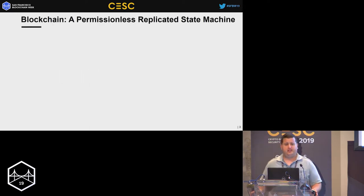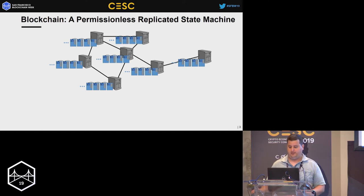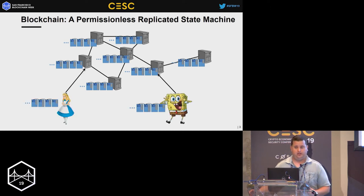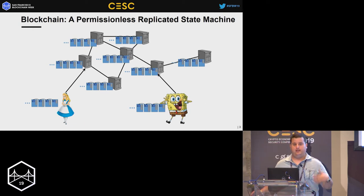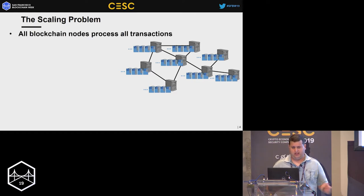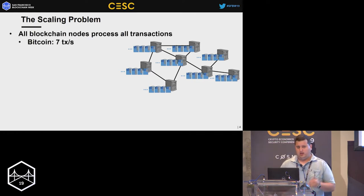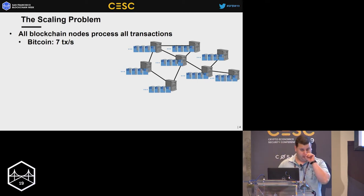I'll start with a quick background. A blockchain is permissionless, usually, and it's a replicated state machine. Basically, you have a bunch of nodes which have to be at the same state roughly at the same time. If Alice and Bob join the network, then every new block that arrives, they have to process it and update the state of the system. This leads to the scaling problem — every node processes all the transactions, and we want mobile phones to be able to process it.